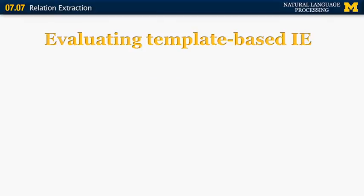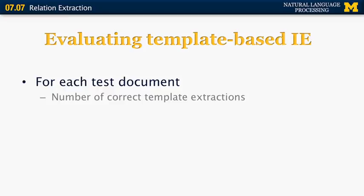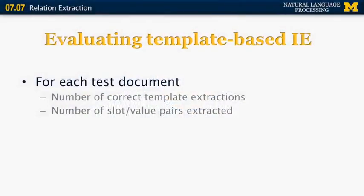How do we evaluate template-based information extraction? It's very straightforward. For each test document, each news story or each scientific paper, we figure out first of all how many correct template extractions happen. For example, if the task is to identify mergers between companies and we are given a document that doesn't have any such mergers, then the correct number of template extractions is zero. If we end up with more than zero, that means that we have made a mistake.